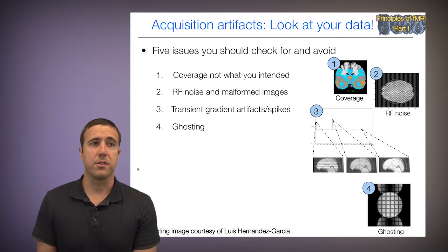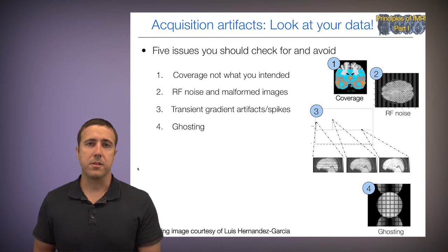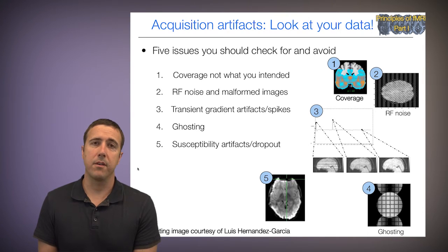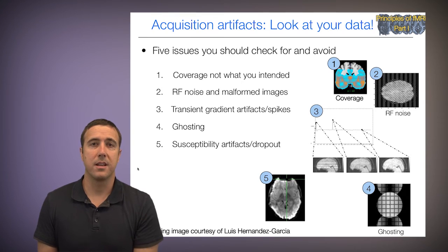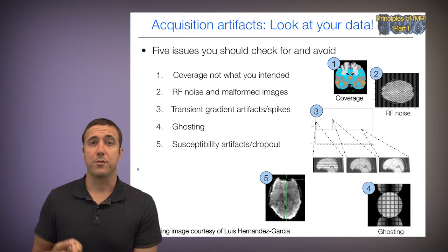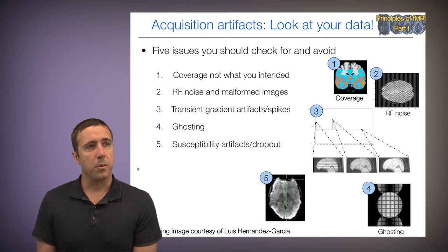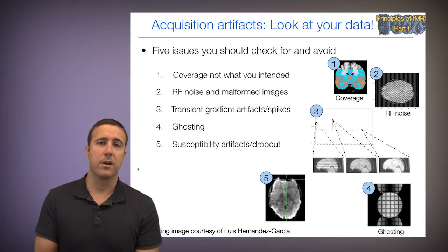Four is ghosting — a spatial wraparound effect, usually in the Y direction for most images. You can see that here quite prominently. There's a little bit of ghosting present in all images, but if it's visible like this, that's a problem. And finally, five is susceptibility artifacts or dropout. You can see here an image where there's a big hole in the front of the brain in the anterior prefrontal cortex. The same contrast that creates the bold signal in the first place also creates susceptibility artifacts, so it's difficult to mitigate those entirely. This is not good for orbitofrontal or prefrontal cortical imaging.